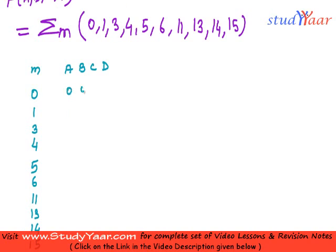What is 0? 0 is 0, 0, 0, 0. What is 1? 1 is 0, 0, 0, 1. What is 3? 3 is 0, 0, 1, 1. What is 4? 4 is 0, 1, 0, 0. What is 5? 5 is 0, 1, 0, 1.